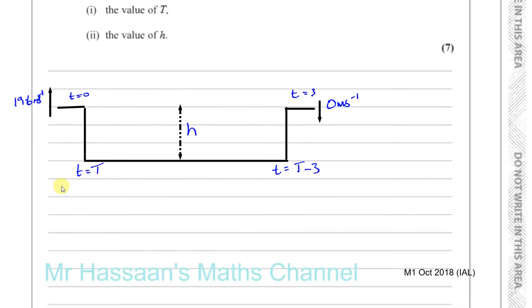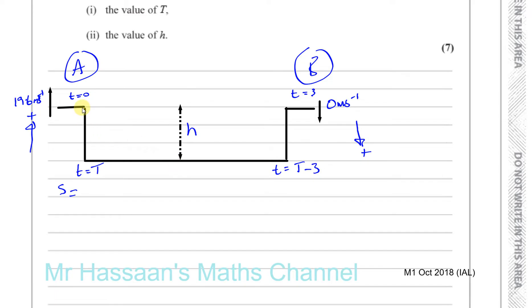Now taking our SUVAT equations — for particle A, I'm taking up as positive. For particle B, I'm taking down as positive. For particle A: S is minus H, because the ground is H metres below the starting point in the downward direction. So displacement S equals minus H. U equals 19.6 metres per second, A equals minus 9.8, and T equals capital T. For particle B: S equals positive H, U equals zero, A equals positive 9.8, and T equals T minus 3.